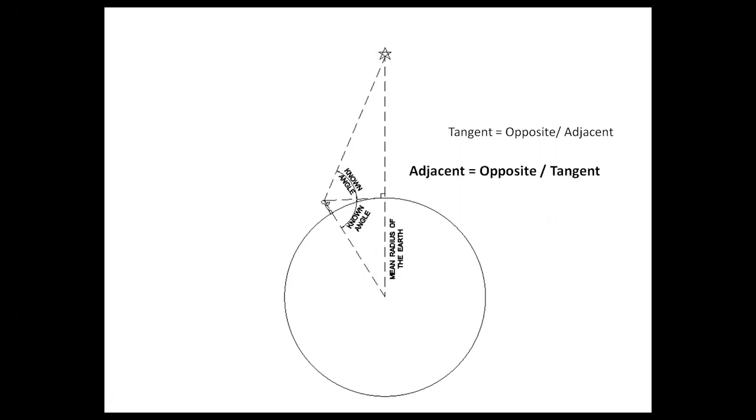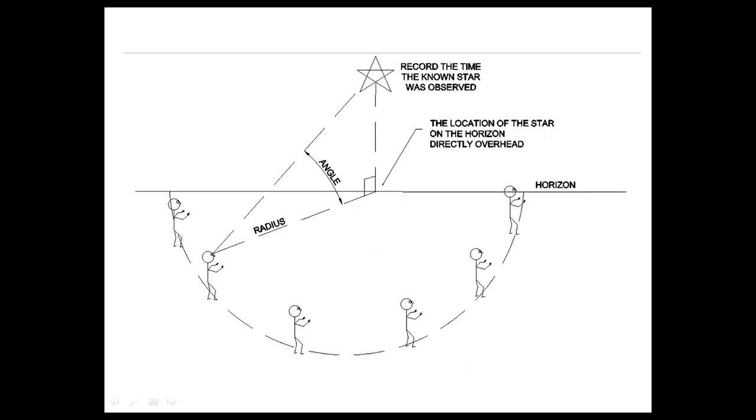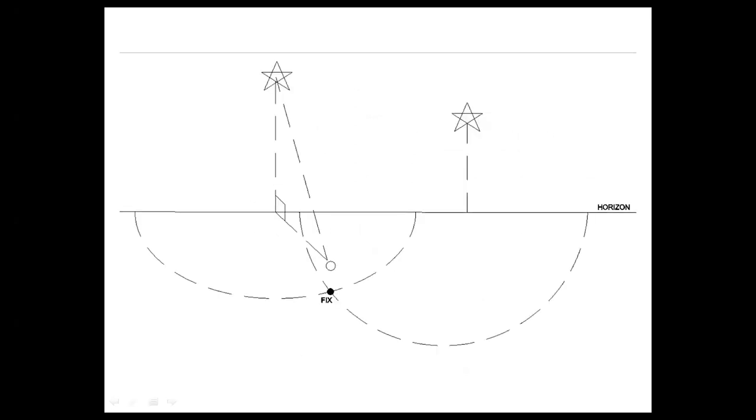Using trigonometry they simply rearranged the formula to calculate their distance so they know the angle and they know this distance so they can calculate how far they are from where that star is directly overhead. The problem now is that this calculated distance puts them somewhere on a radius. They don't know the exact spot on the radius and this is what they are trying to figure out. So they would take a second and maybe a third reading off other known stars and calculate their radial distance from the direct overhead location of those stars. The intersecting point was their location. They called this getting a fix.